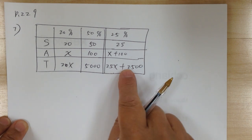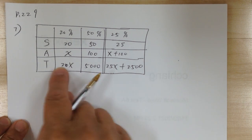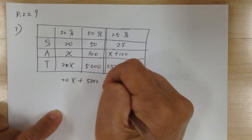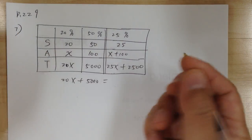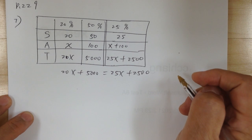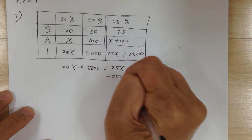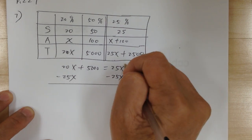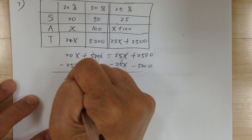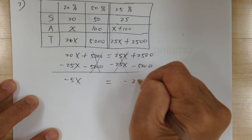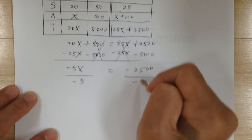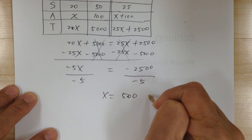Only one variable, so all you need is one equation. Here's your equation: 20X plus 5000. You mix these two to get that — when you mix something you add together. To solve, get minus 25X on both sides — this will cancel out — and minus 5000 on both sides, this will cancel out. So negative 5X equals negative 2500. Then divide by negative 5. X equals 500.